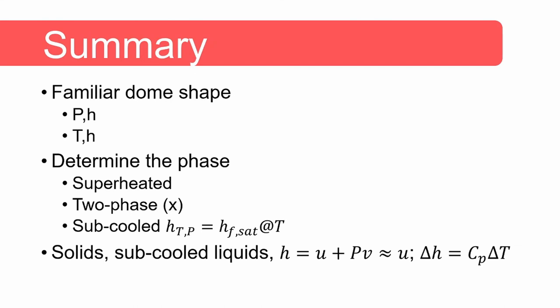In summary, the diagram of enthalpy as a function of pressure or temperature has that familiar dome shape. We can draw a freehand sketch of this dome or use the tables to determine the phase. For a subcooled liquid we assume that enthalpy at a certain temperature and pressure equals the saturated liquid enthalpy at that given temperature. For solids and liquids the specific volume is small and we usually assume that the numerical values of enthalpy and internal energy are the same.